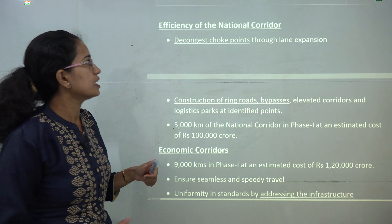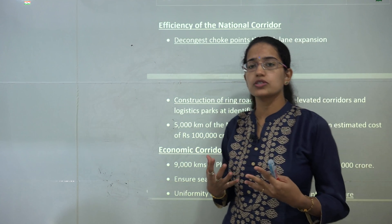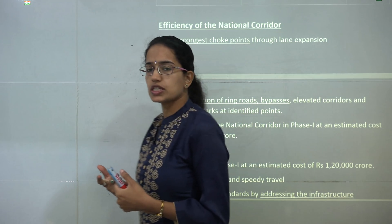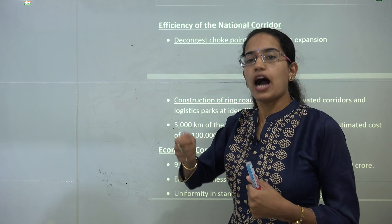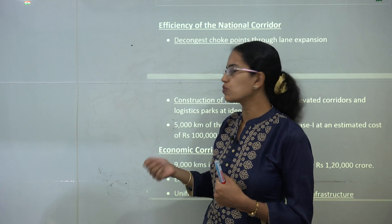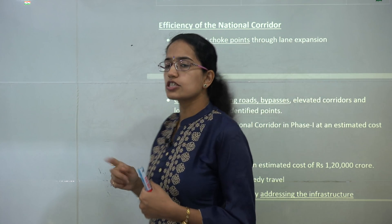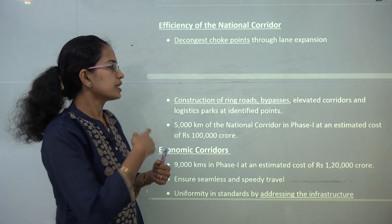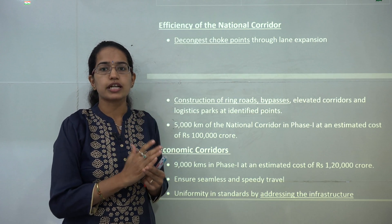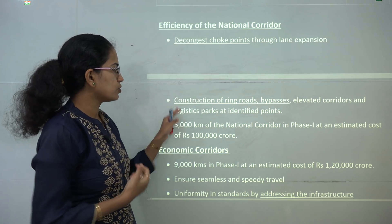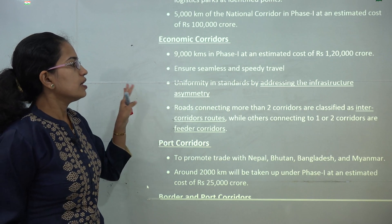When we are building 50 national corridors we need higher efficiency, so we need to find out the areas which are choke points or have higher traffic issues. We need to work around decongestion of those choke points, construction of ring roads, bypasses, elevated corridors, overbridges on trains, and underbridges around railways — all those would be part of this national corridor idea.